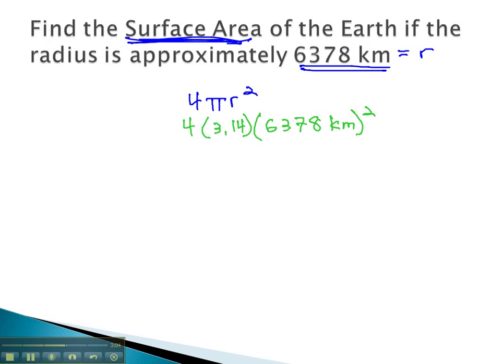And again, we'll use the order of operations to simplify. Doing the exponent first, 4 times 3.14 times... We'll type in our calculator, 6,378 squared.